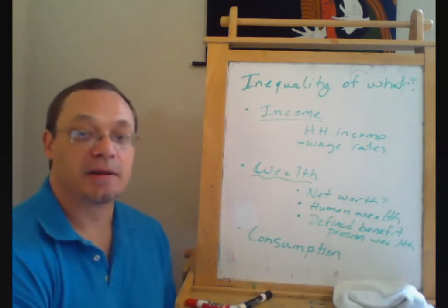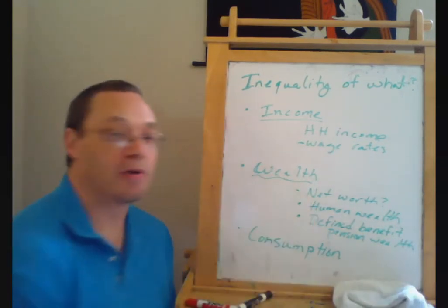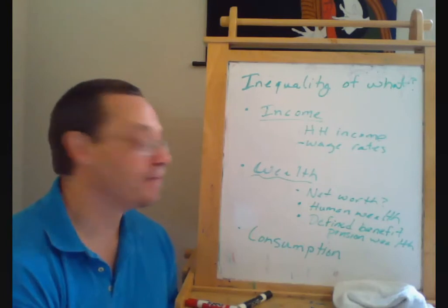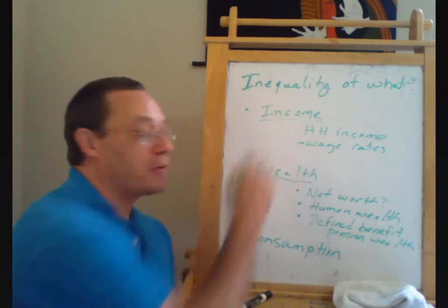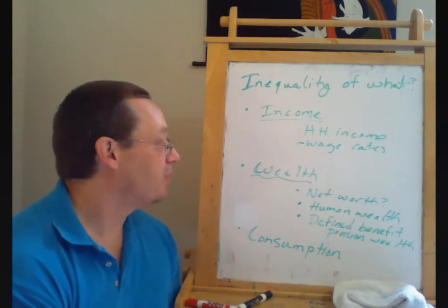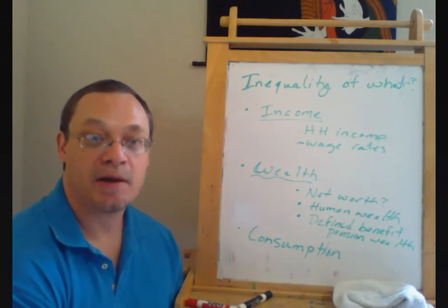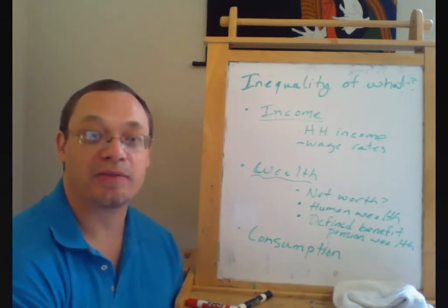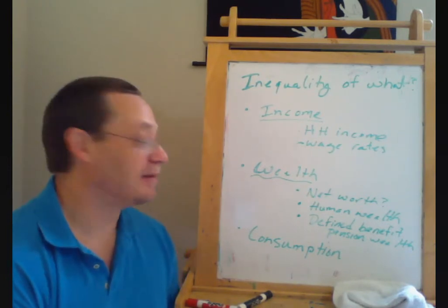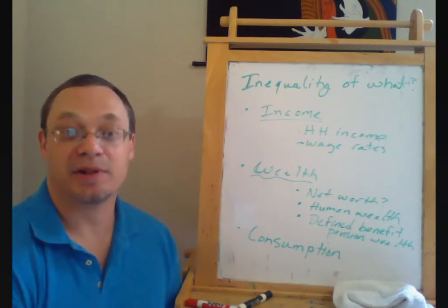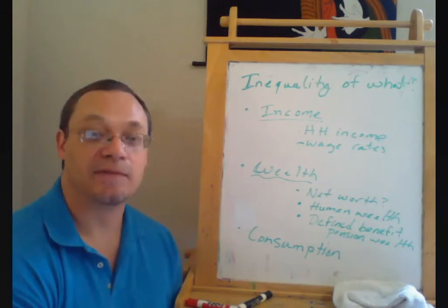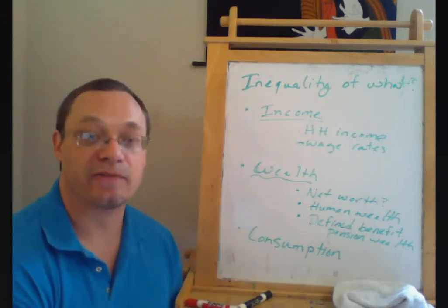Generally speaking, because when we measure wealth we're only measuring external financial wealth and not human wealth, what we're going to see is that wealth inequality is greater than income inequality. For people who don't have a high level of income, almost all of their wealth is their human wealth — the value of their labor over their lifetime. At a slightly higher level, you have labor plus some education. It's only at really high levels that people start holding high levels of financial wealth.